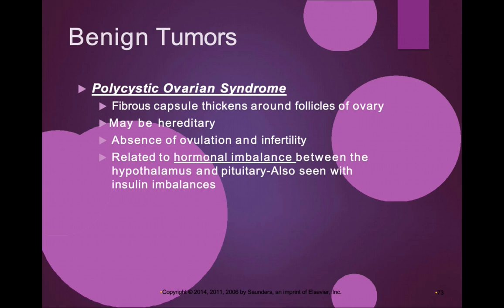From the anterior pituitary: luteinizing hormone, growth hormone, melanocyte-stimulating hormone, adrenocorticotropic hormone, and prolactin for lactation. From the posterior pituitary: oxytocin and ADH. PCOS can also be related to hormonal imbalances beyond the hypothalamus-pituitary axis — we also see it with different forms of obesity, pre-diabetes, and insulin imbalances.